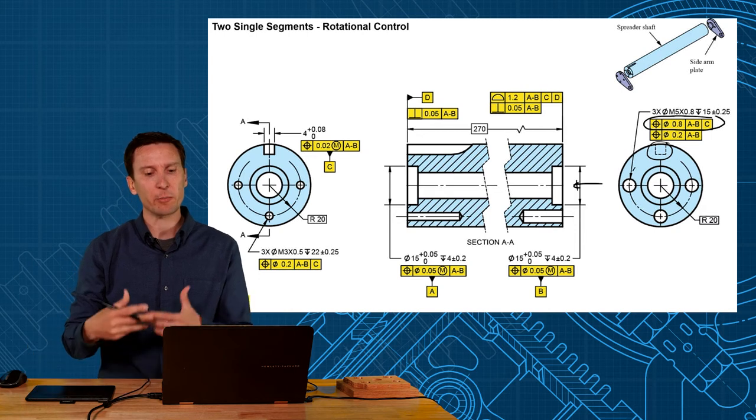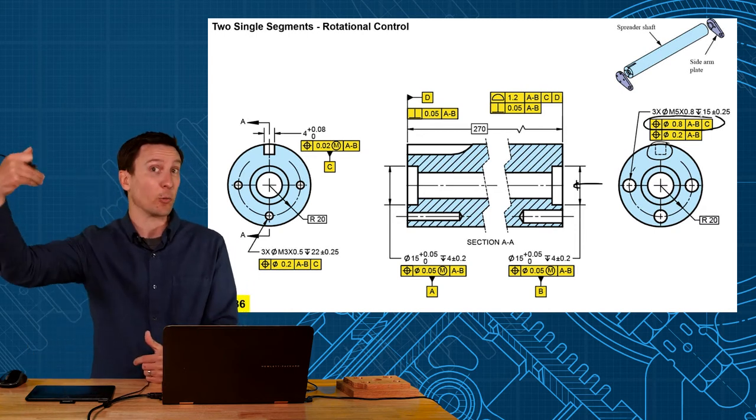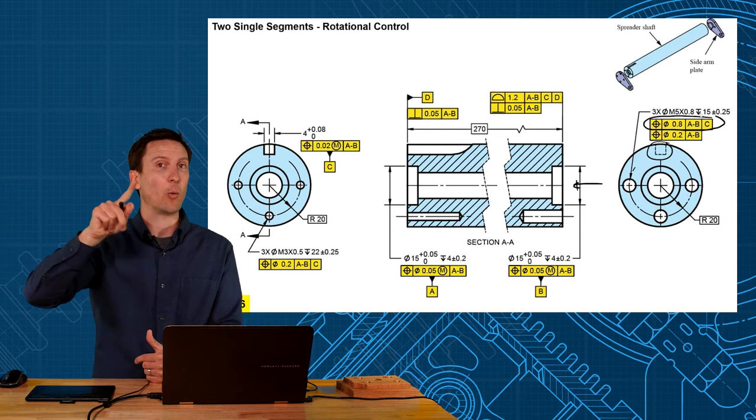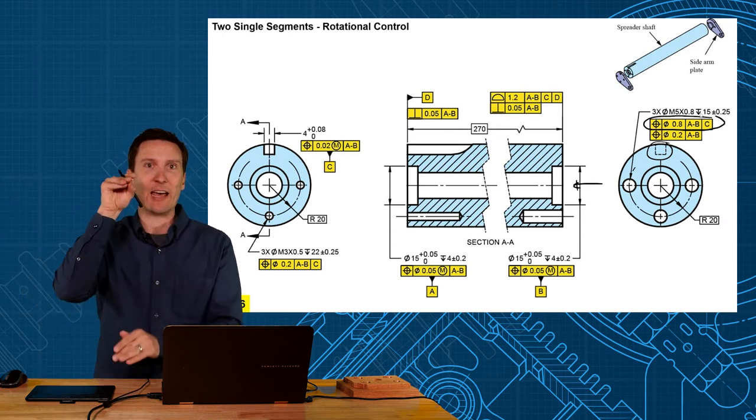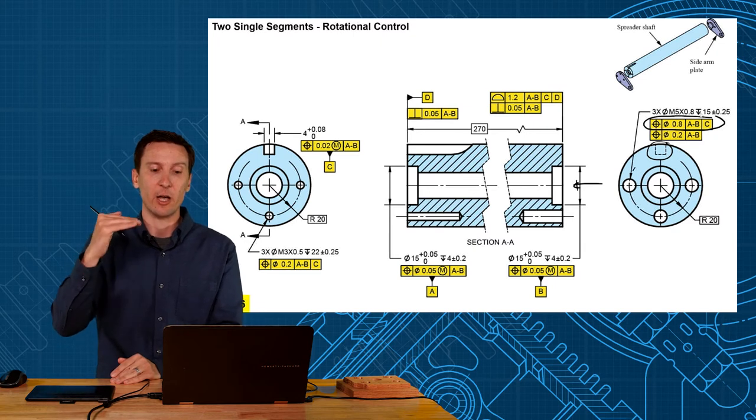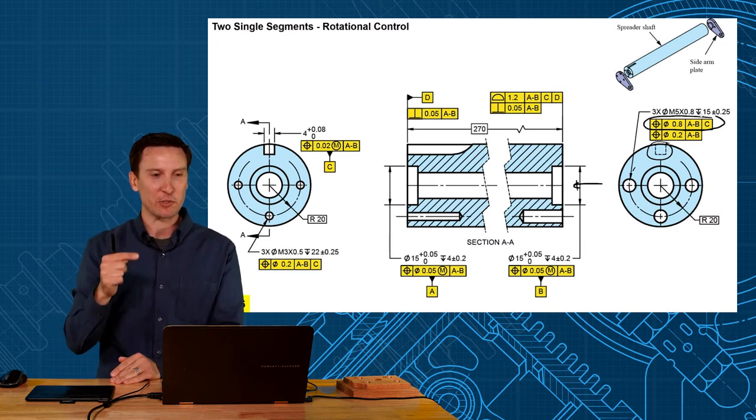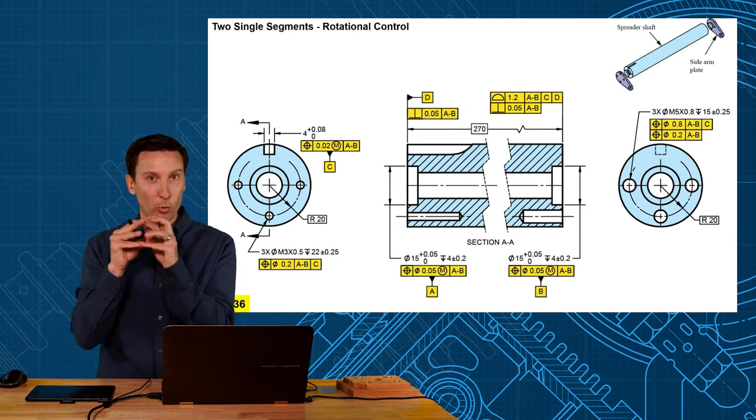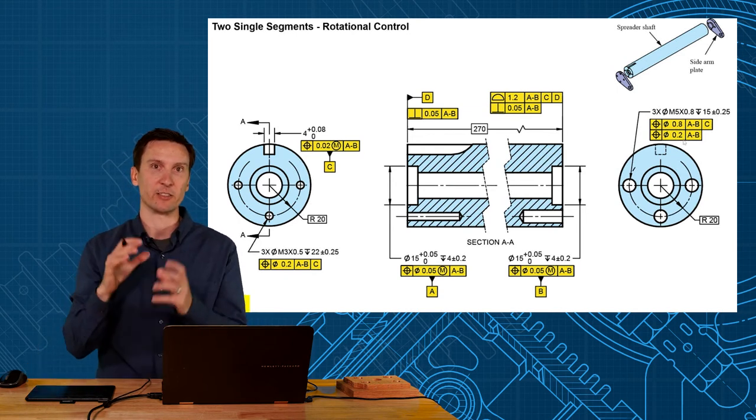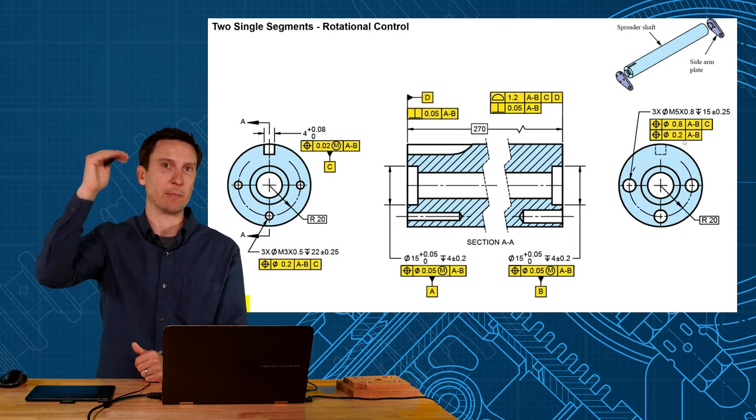We say you could have a position of 0.8 relative to the A-B and when you're clocked to C. However it's more important that these holes are relative to each other and stay centered on the axis. So we use a multi-segment position here and the lower position is controlling the hole-to-hole and relationship to the axis. It's refining what you've set by the larger spec.